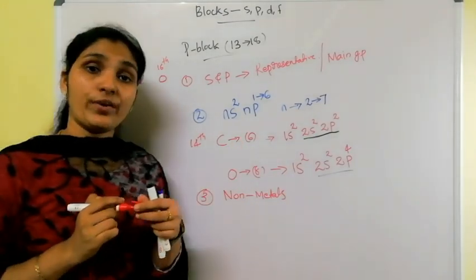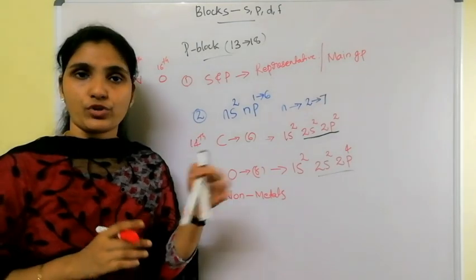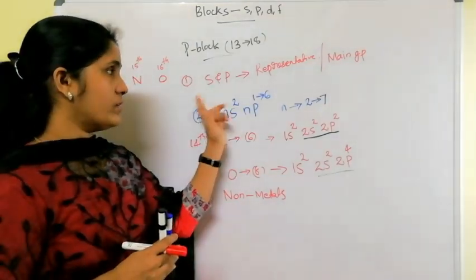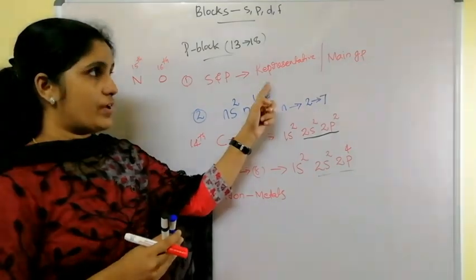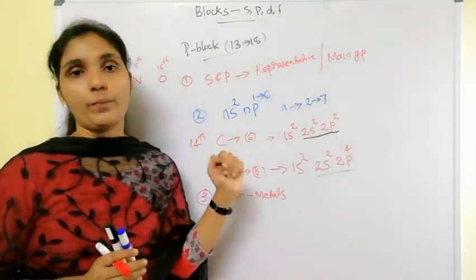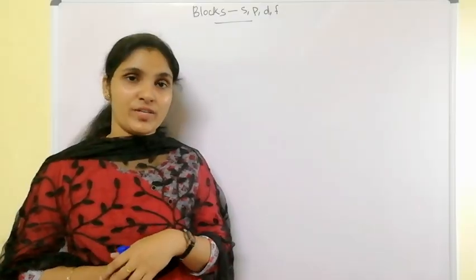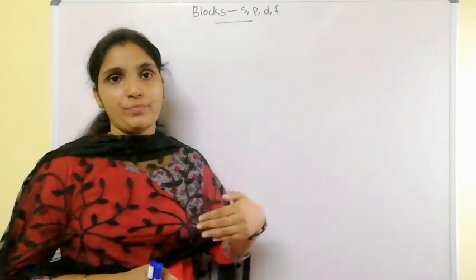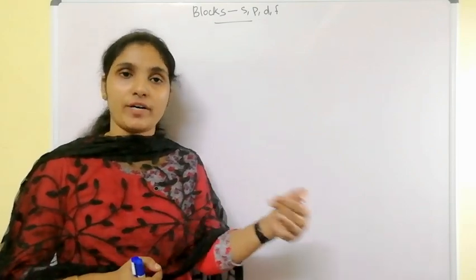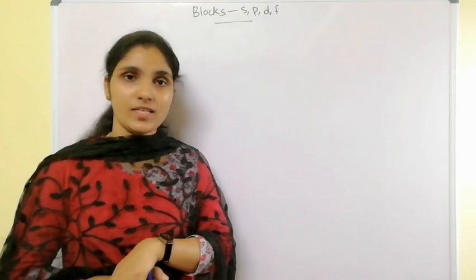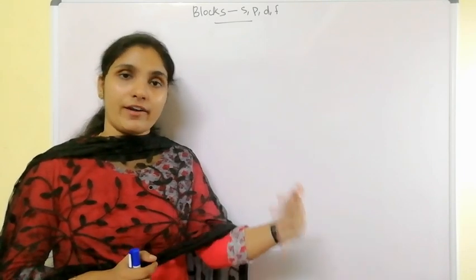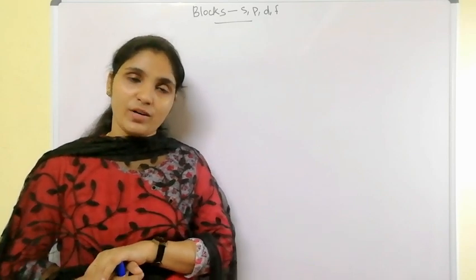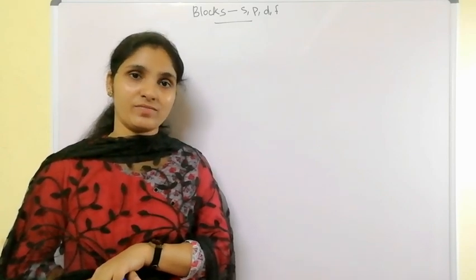The important things to remember for p-block elements are the outer electronic configuration ns²np¹⁻⁶ and the fact that s and p block elements together are called representative or main group elements. The classification of s-block and p-block is now complete. The d-block and f-block will be discussed in the next session. Thank you.